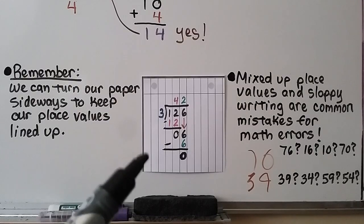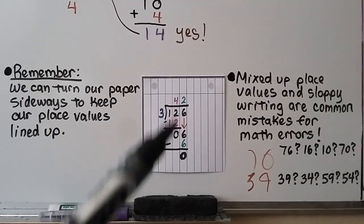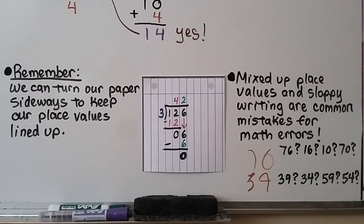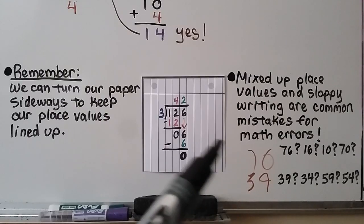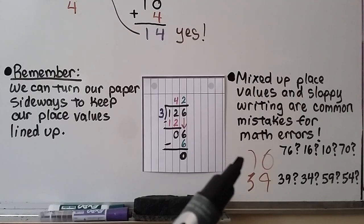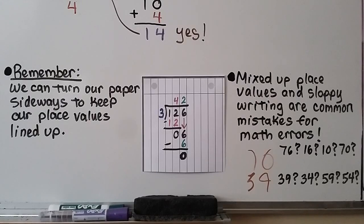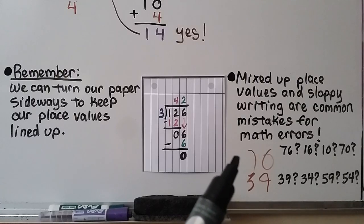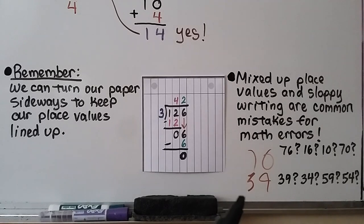Remember that we can turn our paper sideways to keep our place values lined up. Mixed-up place values and sloppy writing are common sources of math errors. If you can't read your own writing in a long division problem, you'd have to redo the math. Or on homework or a test, the teacher might mark it wrong because she can't tell if a number is a 76, 16, 10, or 70. Make sure you write very clearly and keep your place values straight.